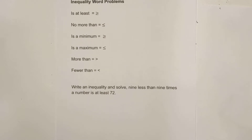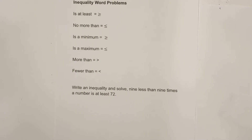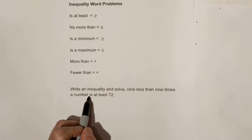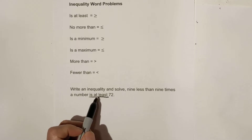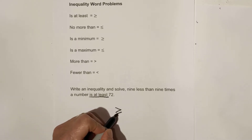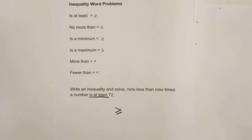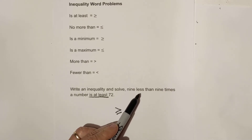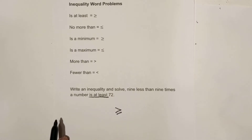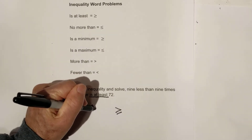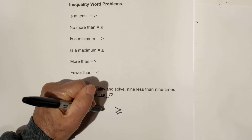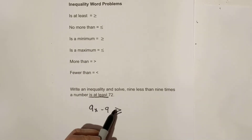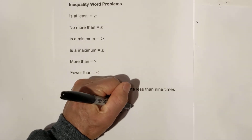Let's get started with the first one. Let me circle 'is at least' — so we know it's going to be a greater than or equal to. It says nine less than nine times a number, so it's going to be nine times a number minus nine, and it's going to be at least — greater than or equal to — 72.